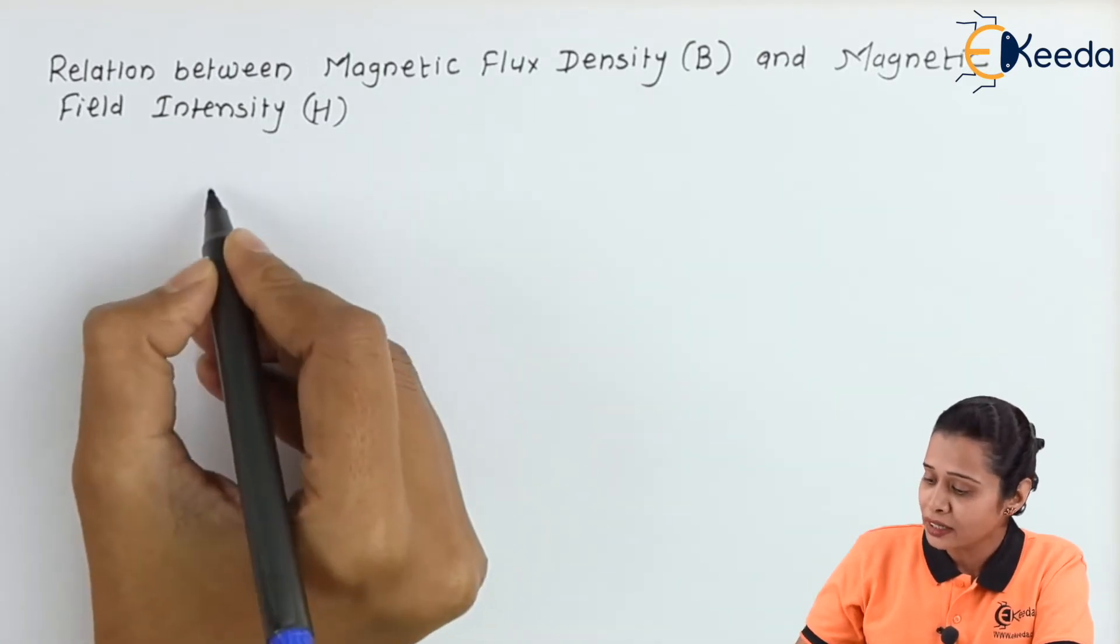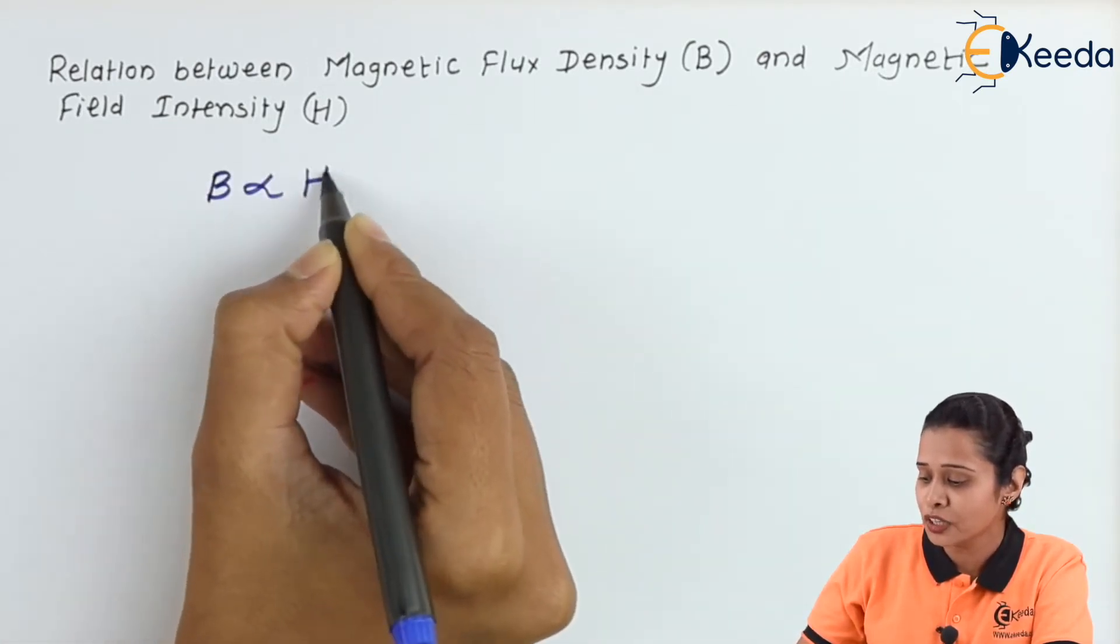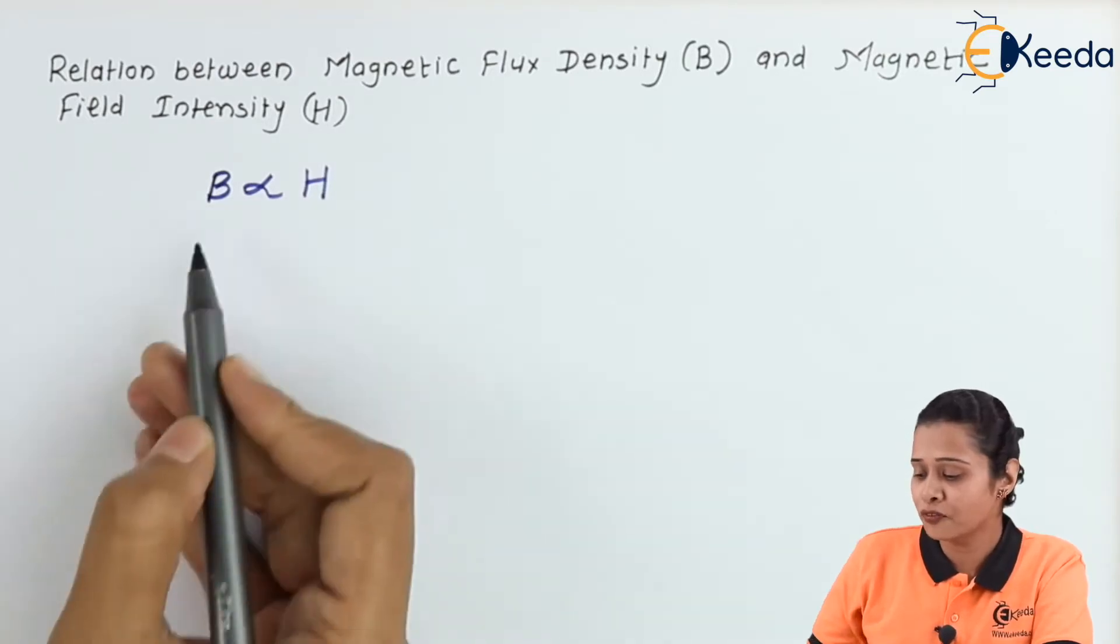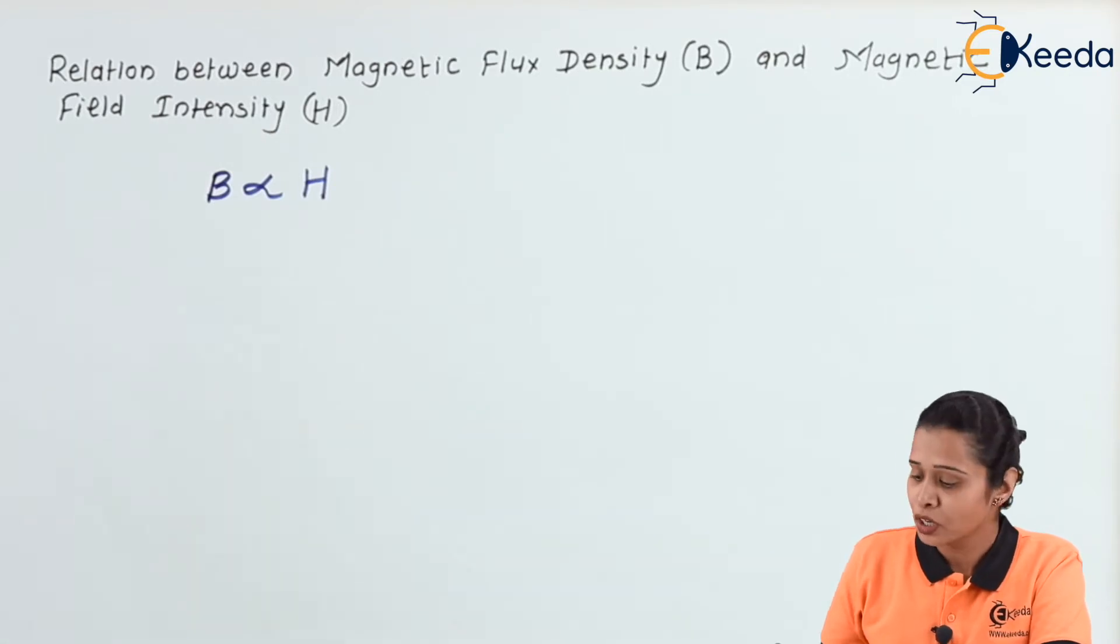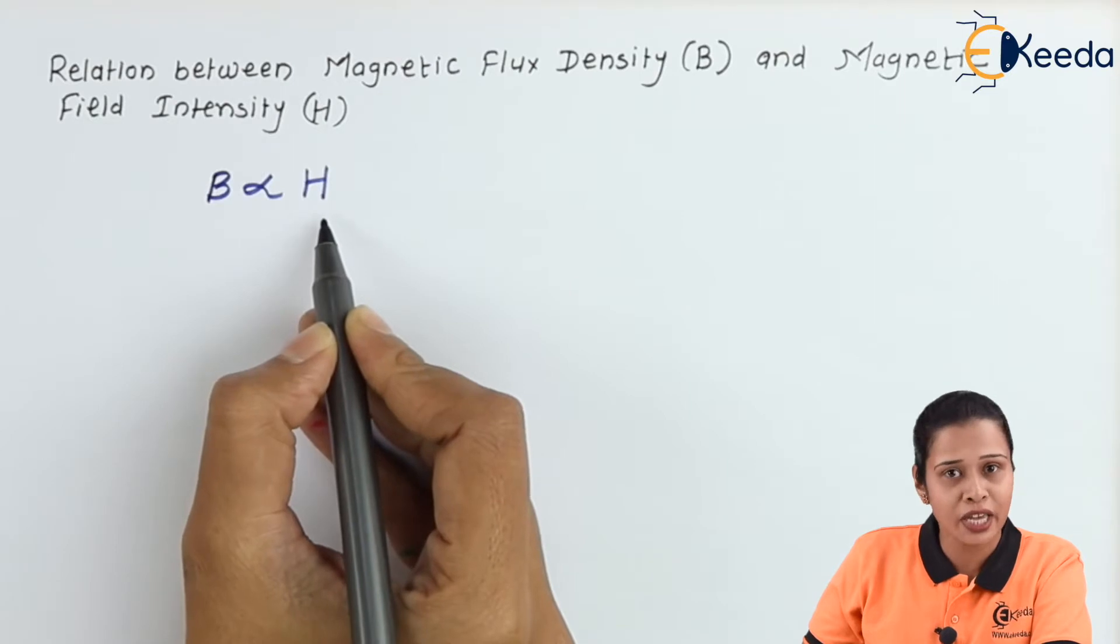So, we can say the magnetic flux density B is directly proportional to the field. Means if the strength is more or the field is more, then the strength will be more. So, we can write here B is directly proportional to H.